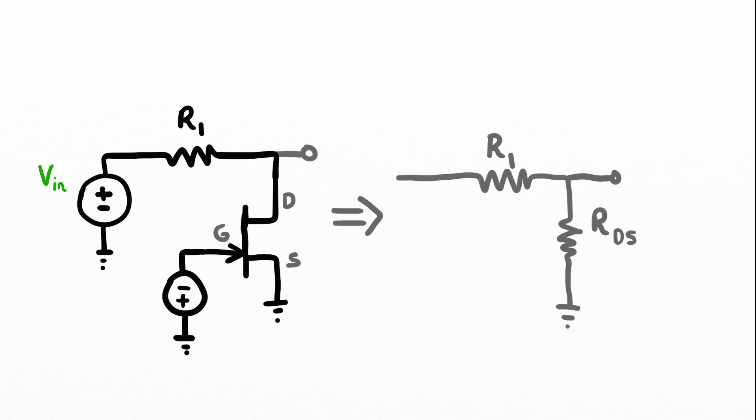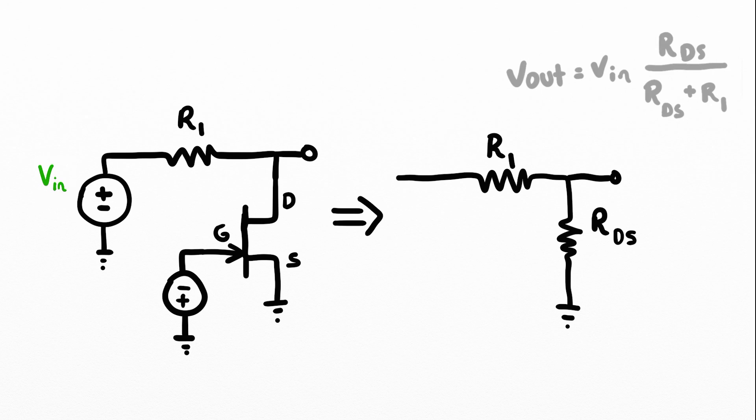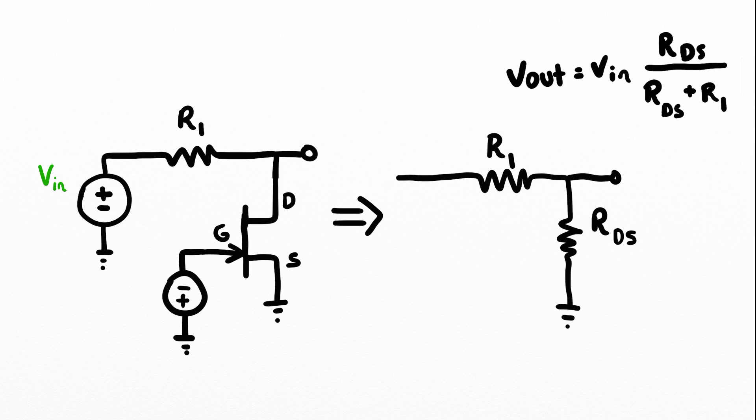To simplify the analysis, we could think of this as a voltage divider. Where R1 is that input resistor, and R drain to source is the resistance seen at the two terminals of the output of that JFET. The output voltage equation is the input times the resistance of the drain to source over the resistance of the drain to source plus R1, that input resistor.